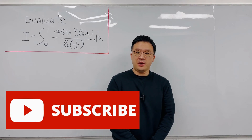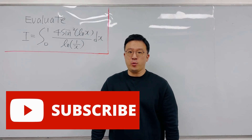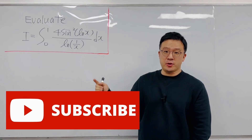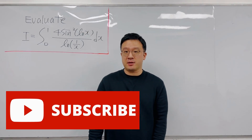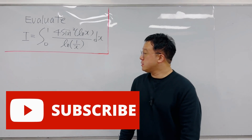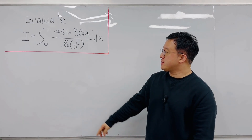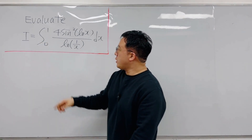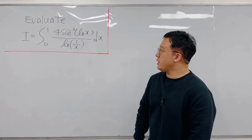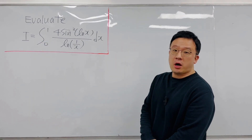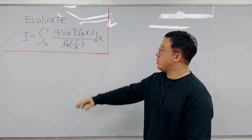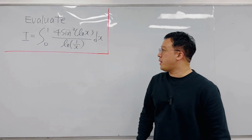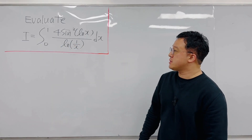Hello guys, welcome back. PK here. In this video, we're going to be working on this interesting integral using Feynman's technique. The question is: evaluate the integral from 0 to 1 of 4 times sine squared of ln(x) over ln(1/x), dx.